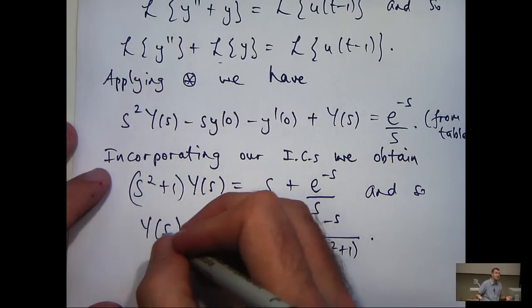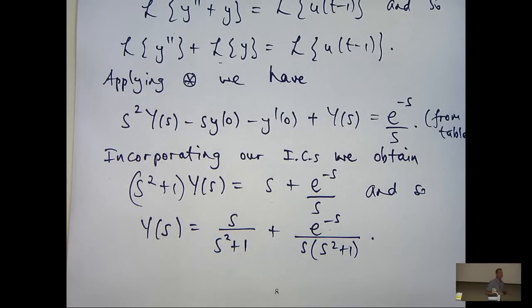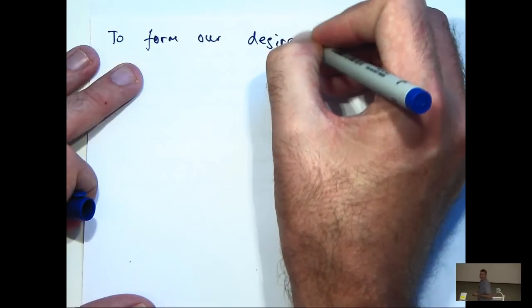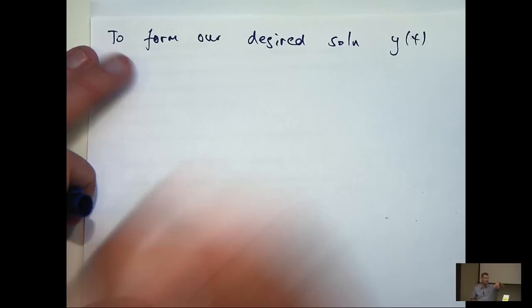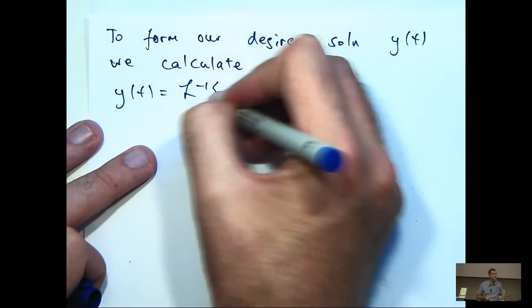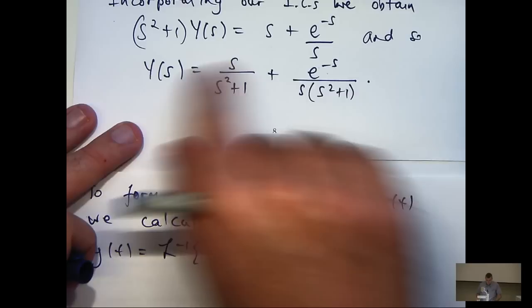So, what I would like to do now is actually untransform everything. So I want to take the inverse Laplace transform of this, and out will pop my solution to the initial value problem, little y of t. So let's do that, inverse Laplace transform of both sides here to form little y of t.